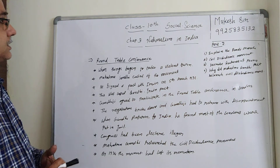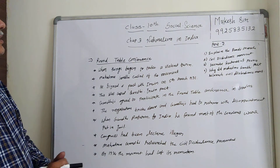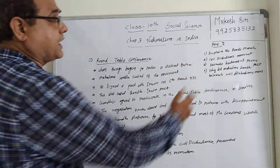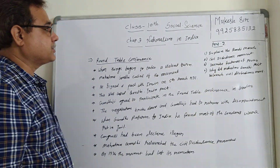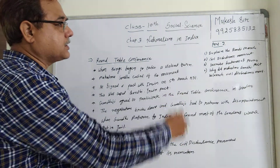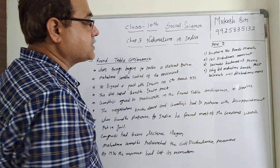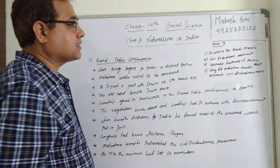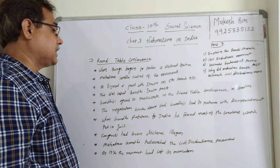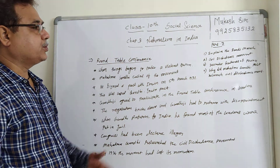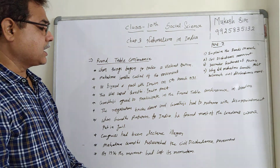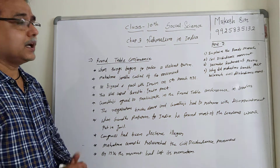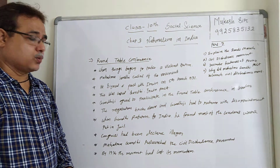This chapter's second part is now over. In the third part video we will cover the remaining portion. Important exam questions from this Part 2 video: explain the Dandi March, Civil Disobedience Movement, describe the features of the Poona Pact, and why did Mahatma Gandhi relaunch the Civil Disobedience Movement. Okay friends, subscribe to my channel and share with more students. Bye friends!